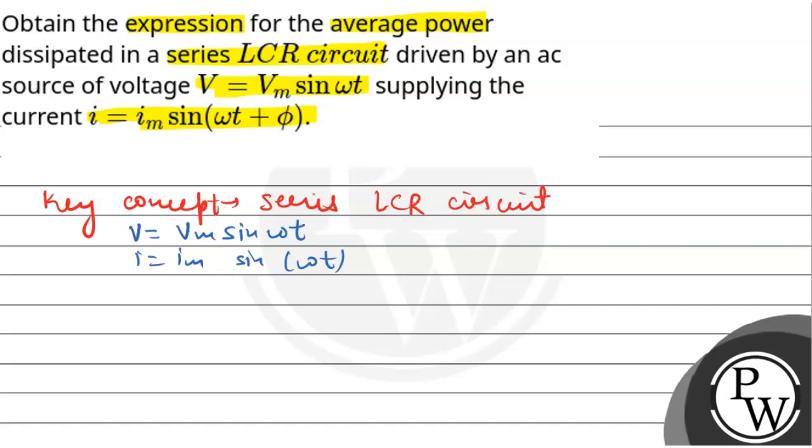The maximum voltage and maximum current are related by impedance. The relation for impedance gives us Im equals Vm upon Z. The maximum current will be equal to maximum voltage upon impedance of the LCR circuit.